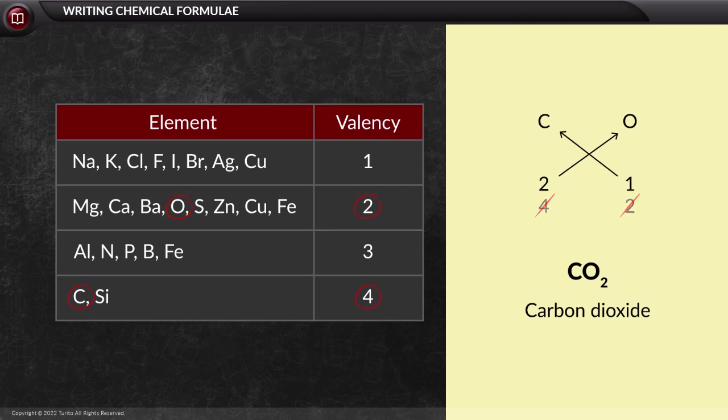While writing the name of different chemicals, we also come across many elements which have more than one valency. For example, copper exists in more than one form. How to differentiate it?